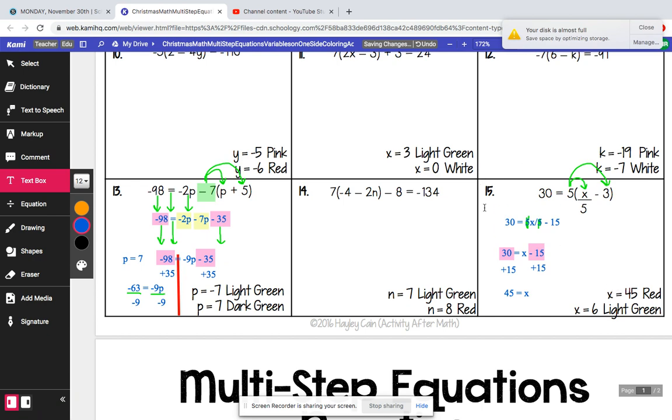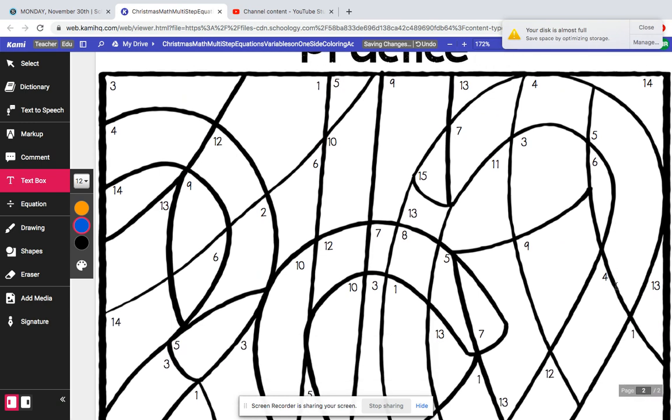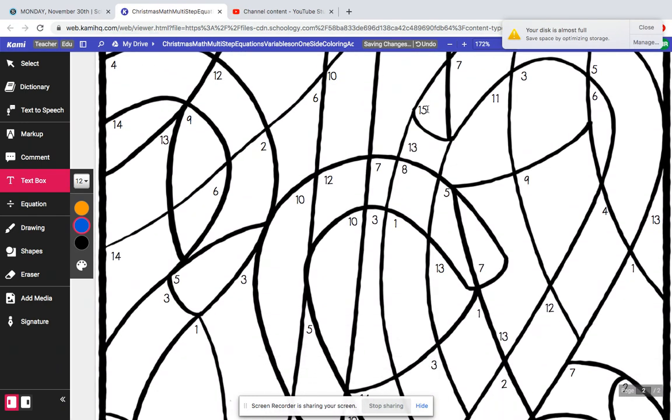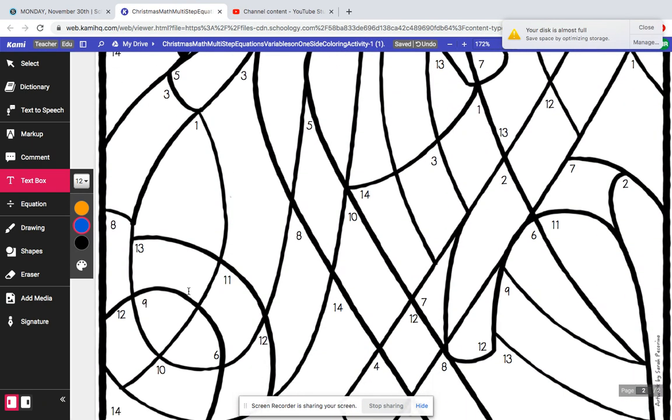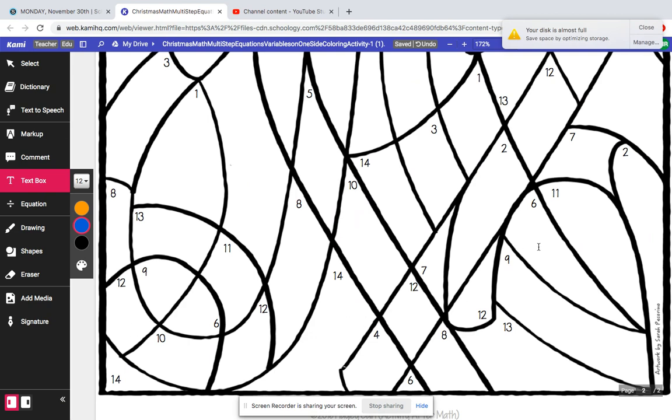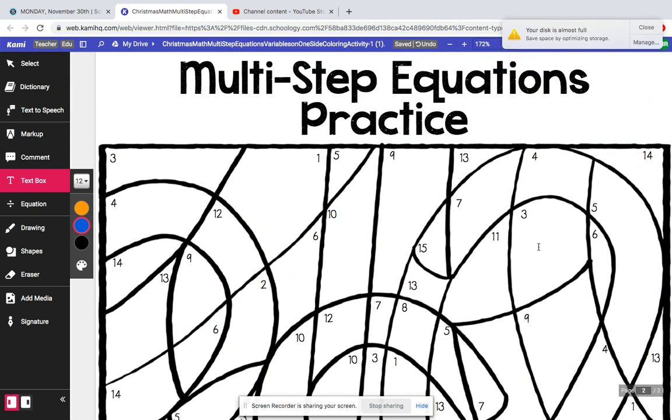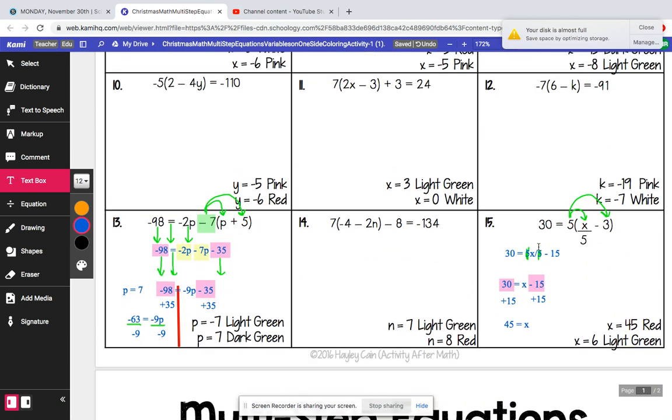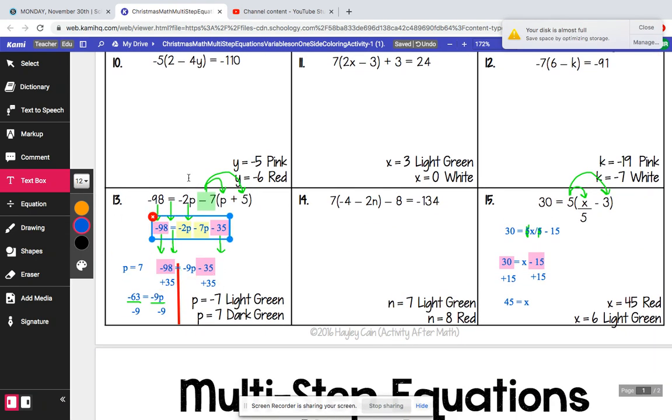So everywhere you see a 15, you are going to color red because our answer is 45. So this will be red. I'm not seeing any other 15s. But I'm hoping this was helpful. If you have any questions or anything, you have your steps here that you can look at as well. But please let me know. And I hope this was helpful. All right. Have a great day.